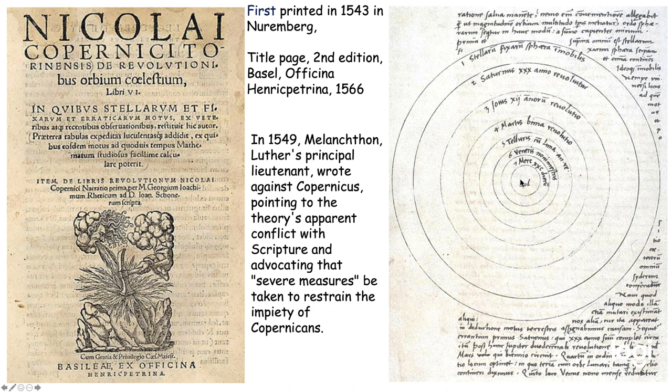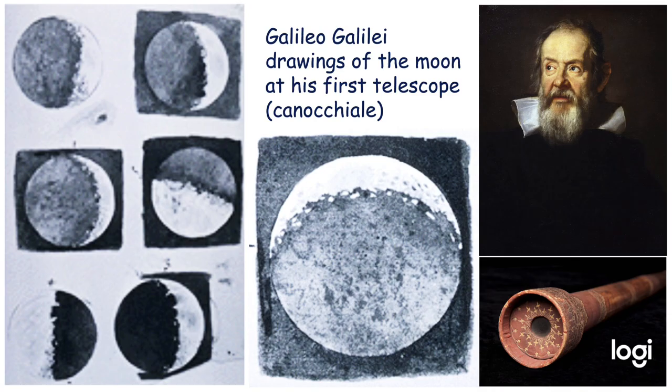Copernicus presented a very different idea with the Sun at the center of the universe, and then Mercury, Venus, the Earth, Mars, Jupiter, Saturn, and the fixed stars further away. So this was a big revolution in thinking that appeared to be against the teaching of the Bible.